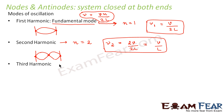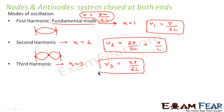Similarly, the third harmonic corresponds to n=3. In this case, the frequency is ν₃ = 3v/2L. The diagram shows nodes at multiple points and antinodes at the points in between. These are the different modes of oscillation in case of standing waves in a system which is closed at both ends.